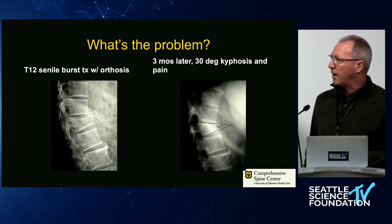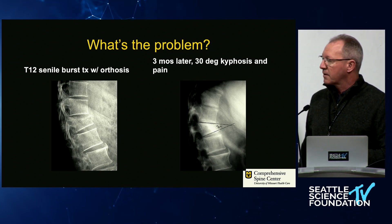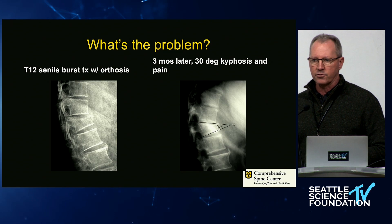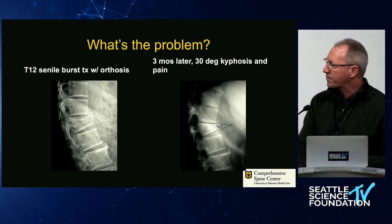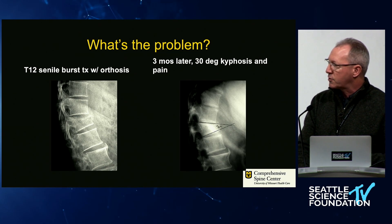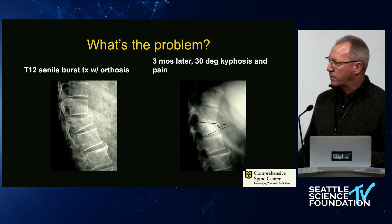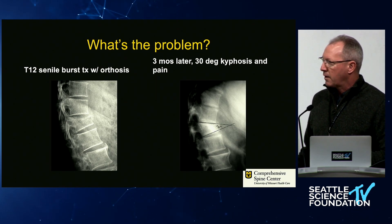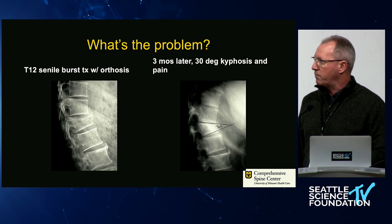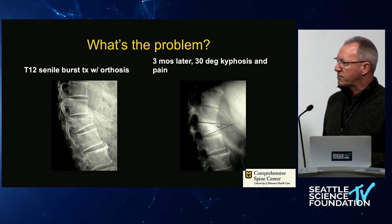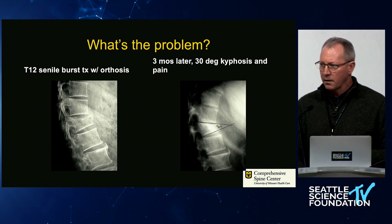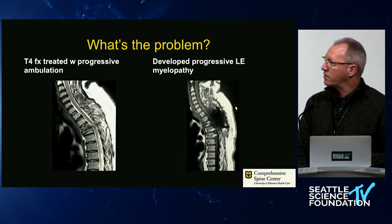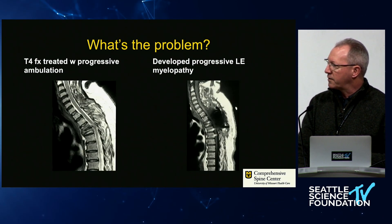Let's frame the flavor of the problem. Here's a patient with a T12 — what we typically call senile burst fractures — to distinguish them from the younger patient with trauma burst fractures. Initially it looks not so bad; Klaus would call this OF2. But unfortunately three months later, the patient has progressed to substantially greater kyphosis with worse pain. Predicting which patients will do this is still difficult for us.